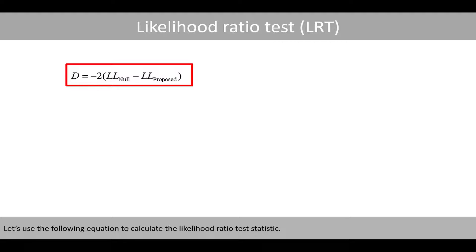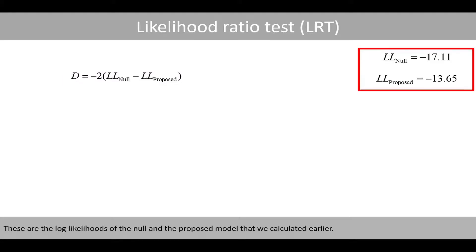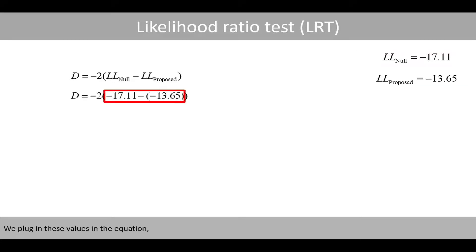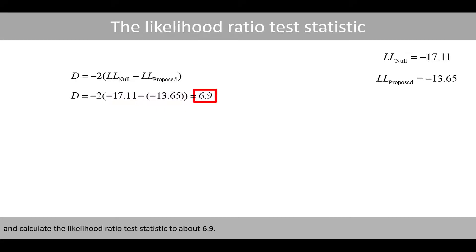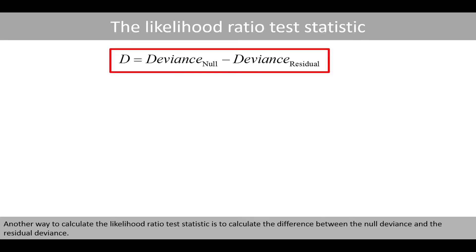Using this equation to calculate the likelihood ratio test statistic, we plug in the log likelihoods of the null and the proposed model that we calculated earlier, and calculate the likelihood ratio test statistic to about 6.9. Another way to calculate the likelihood ratio test statistic is to calculate the difference between the null deviance and the residual deviance.